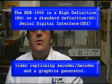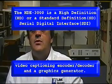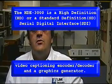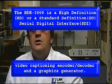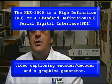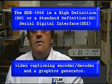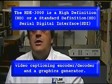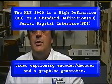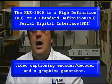The HD 3000 is a captioning encoder, decoder, redirects data, and graphics generator for both high definition and standard definition serial digital interface. It can use NTSC or PAL for its standard definition input and uses the most popular formats for high definition input, including 1080i.